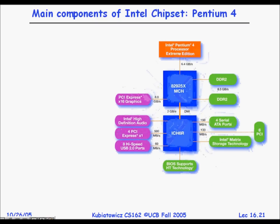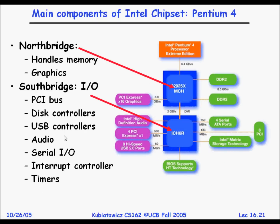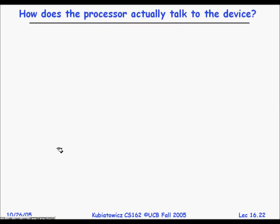There is an Intel chipset diagram showing the PCI bus, disk controllers, audio, interrupt controllers, and so on. That covers the first lecture on I/O. Next we will look at direct memory access (DMA) and how processors actually communicate with devices. Hopefully you now have a basic understanding of input/output systems in your operating system.